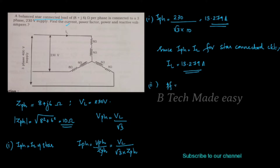Power factor is equal to cosφ. Cosφ is equal to R divided by Z, that is 8 divided by 10, which equals 0.8. So power factor is 0.8.